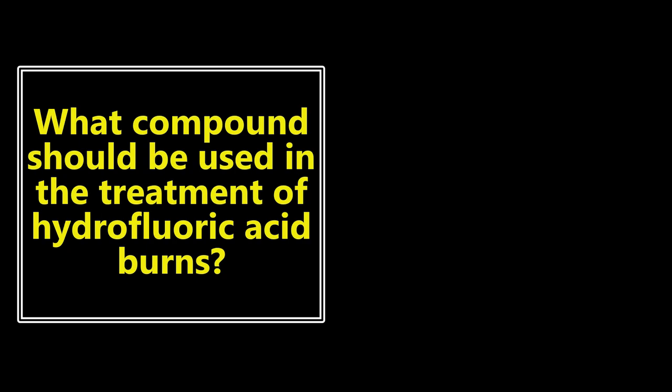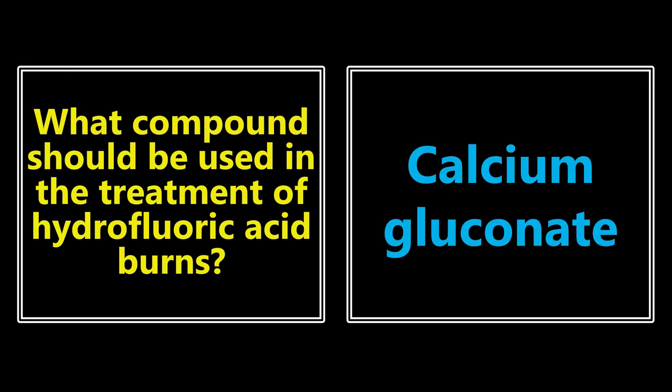What compound should be used in the treatment of hydrofluoric acid burns? One of those things we don't see in the department very much, but they really love to ask this on the exam. If a patient has hydrofluoric acid burns to the hand, for example, the treatment is going to be calcium gluconate. This can be provided topically, and if symptoms aren't improving, it can be intravascular — injected directly into the vein or artery. Calcium ions sequester fluoride ions and help relieve some of the pain caused by that burn.